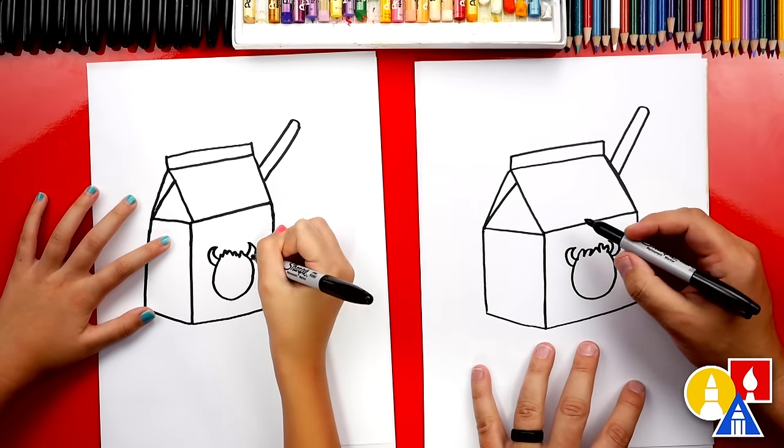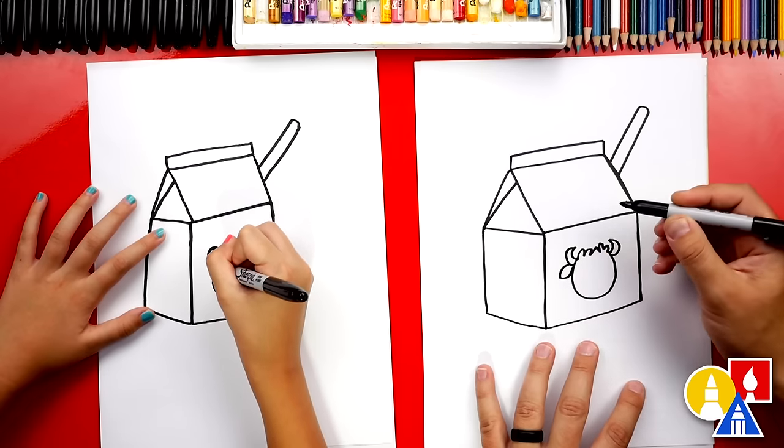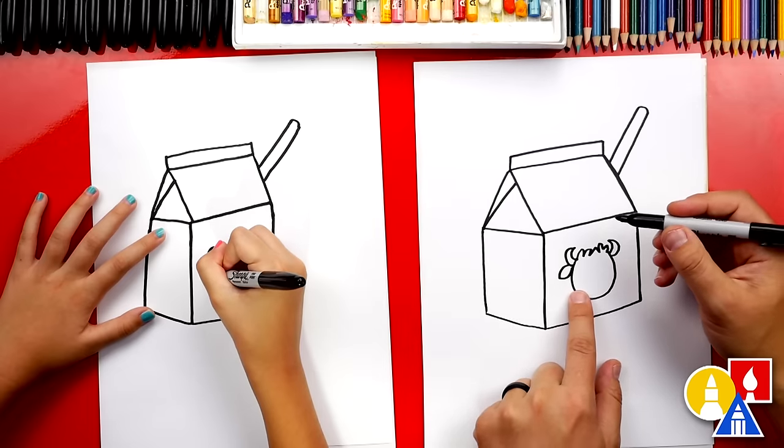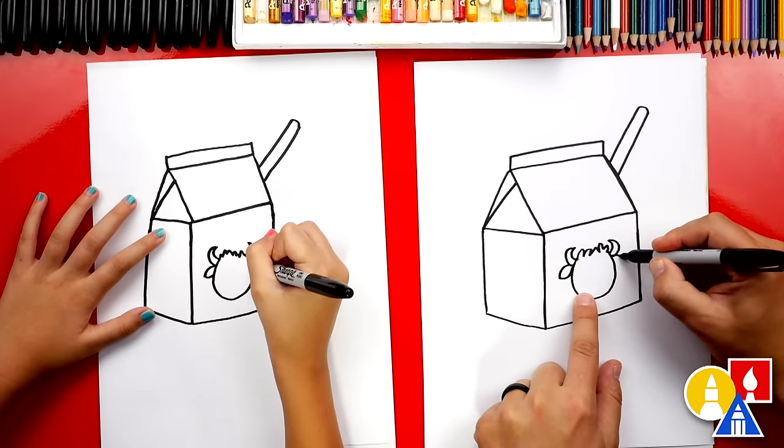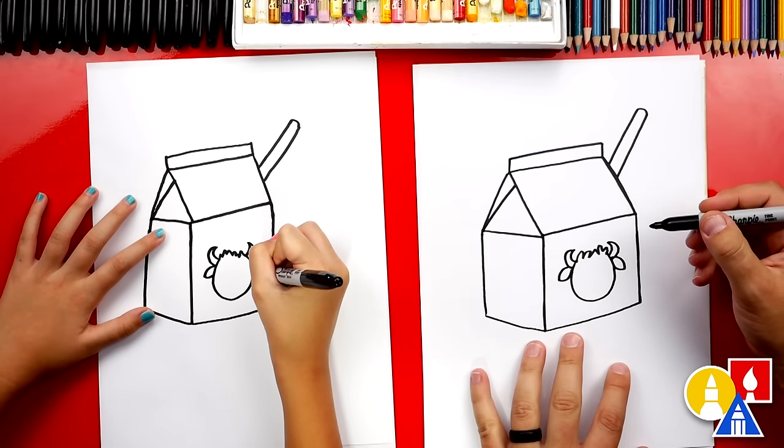Then we also need to draw cow ears. We're gonna draw a curve coming down and then back up. And it looks like a football shape or a leaf. We could do the same thing on the right. Down, up.